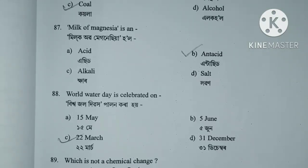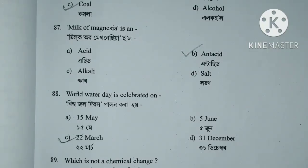Question number 87. Milk of Magnesia is — Acid, Antacid, Alkali, or Loban? Option B, Antacid.